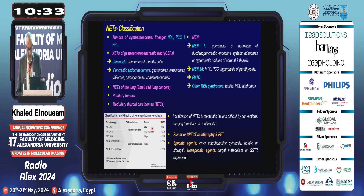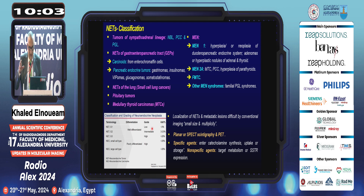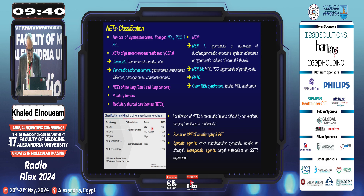As previously addressed, localization of neuroendocrine tumors is extremely difficult with anatomical imaging, so you resort either to SPECT or PET. The differences between SPECT and PET: in SPECT you rely upon a radiotracer; in PET you rely upon positron-emitting radionuclides. Both tracers are either specific or non-specific. Specific tracers tackle catecholamine synthesis, uptake, and storage — targeting catecholamine metabolism — while non-specific tracers target metabolism or somatostatin expression.